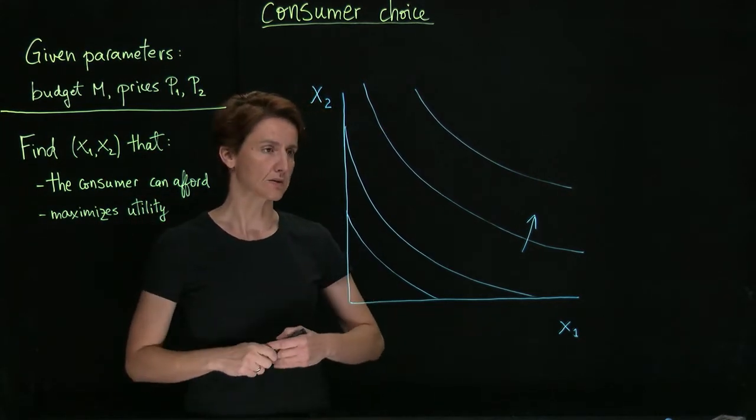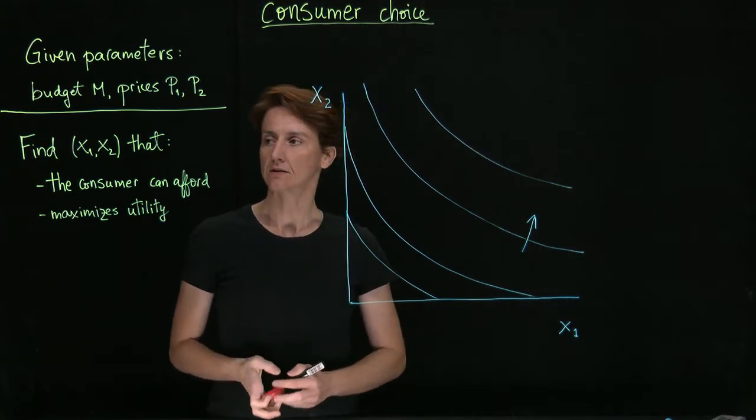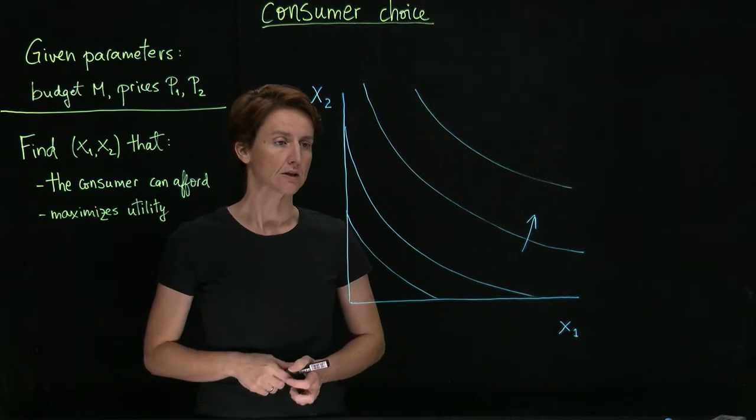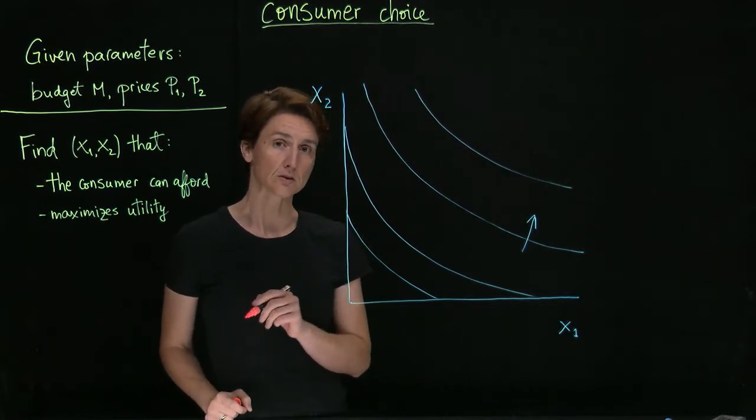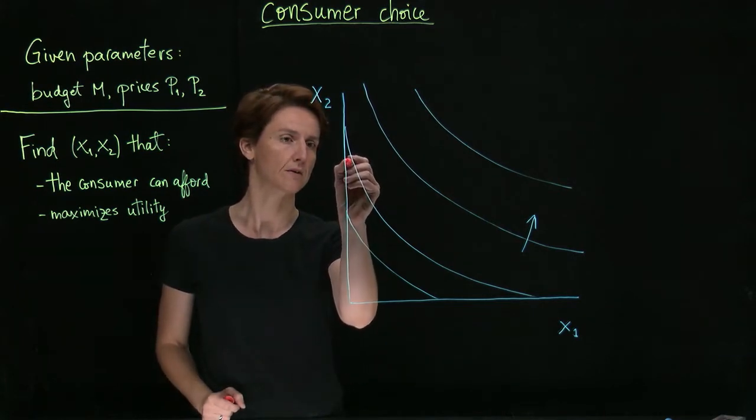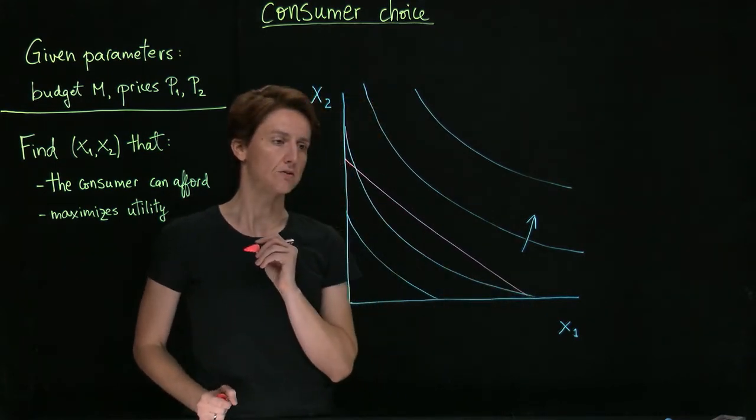Let's take those two steps separately. First, what does it mean for the consumer to be able to afford the combination of goods? Remember we've talked about the budget constraint and how a certain budget and set of prices allow us to draw a budget constraint.